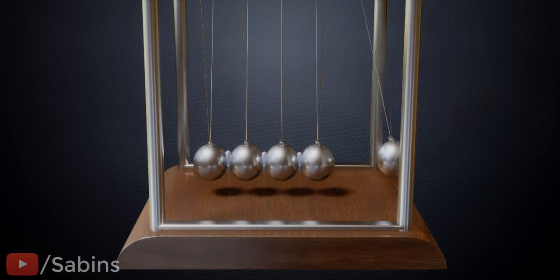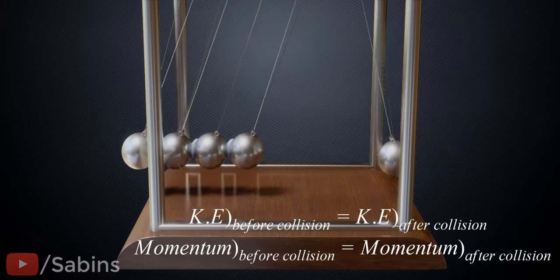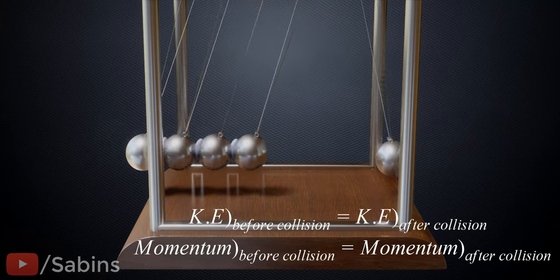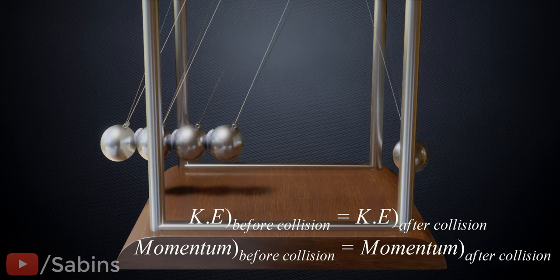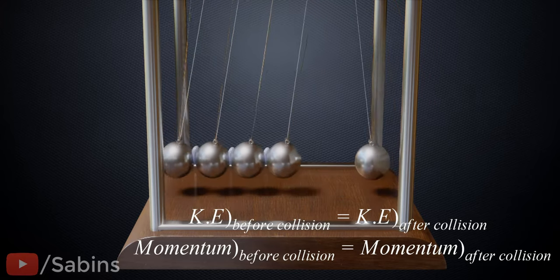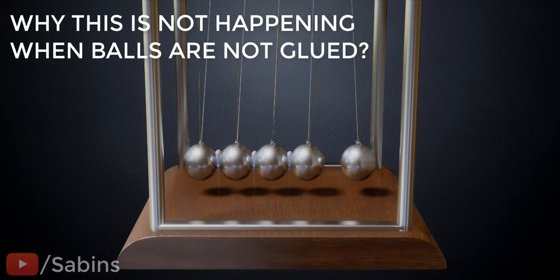In fact, this motion completely satisfies both the conservation of energy and momentum. You can check the cases before and after the collision. Both the conservation of momentum and energy are balanced here. Then why is this consequence not occurring in actual practice?